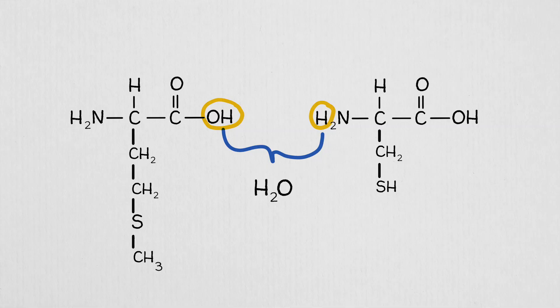When amino acids link together, dehydration synthesis occurs between the amino group of one monomer and the carboxyl group of the other. The covalent bond formed between them is referred to as a peptide bond, which is why a chain of amino acids is called a polypeptide. This is the primary form of protein structure, formed during protein synthesis at a ribosome within a cell. Hydrogen bonding bends the chain, forming alpha helices and beta-pleated sheets, with further folding in tertiary structure as R groups interact to attract or repel. And if you have more than one chain interacting in a globular shape, that's quaternary structure.